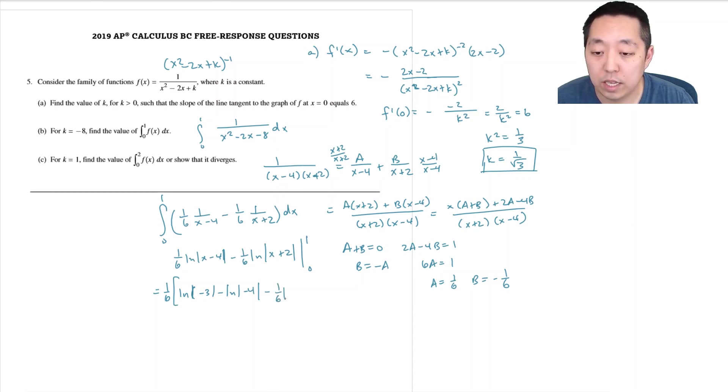ln of negative 3 minus ln of negative 4, minus 1/6 ln of 3 minus 1/6 ln of 2.